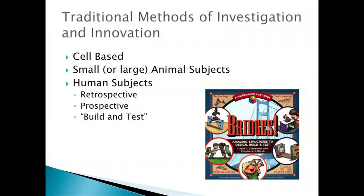Traditional investigation in medicine spans from cell-based work to small and large animal subjects to human observational or prospective studies. As scary as it may seem, a lot of what we do is built on the build-and-test model — a surgeon comes up with an idea, tries it on one, ten, or a hundred patients, then looks back to see how it's working. In congenital heart disease, where patients with exactly the same problem are rare, most of our common surgeries started exactly this way: somebody had an idea, tried it, it worked or didn't, they modified it, and five, ten, or twenty years later they report on outcomes.